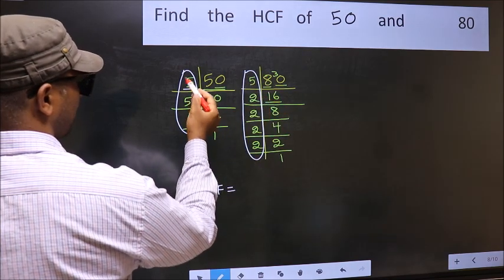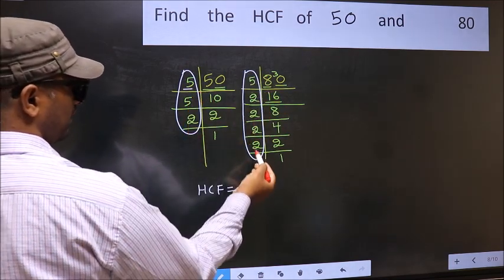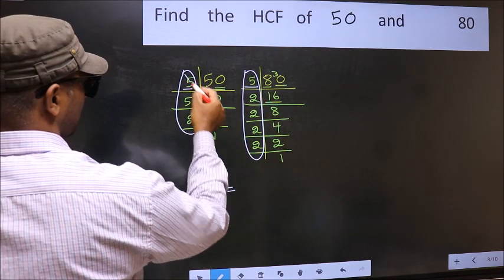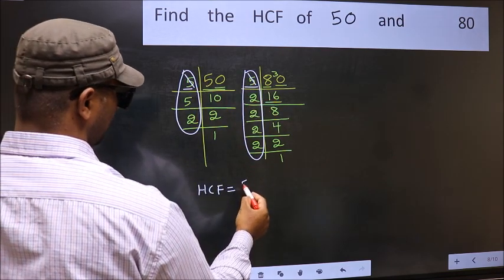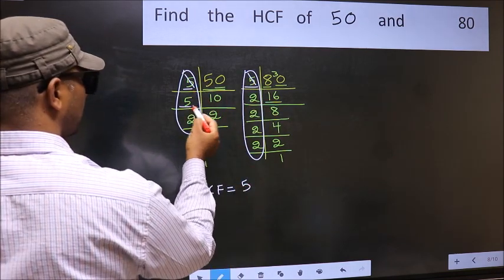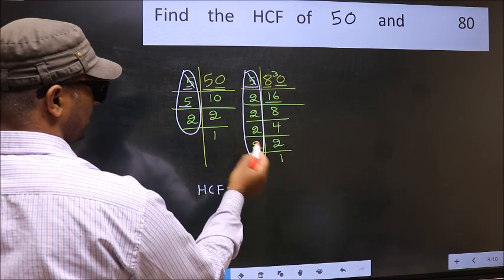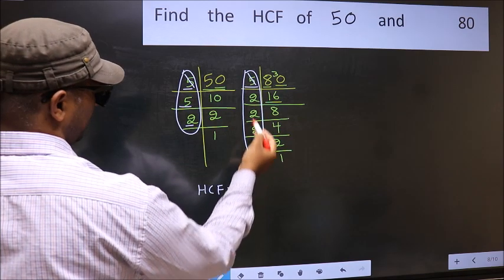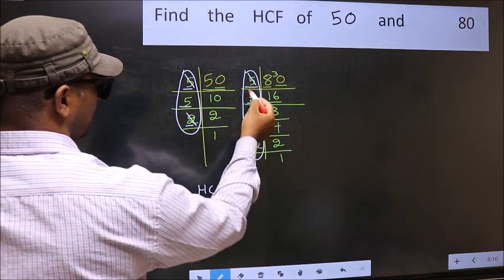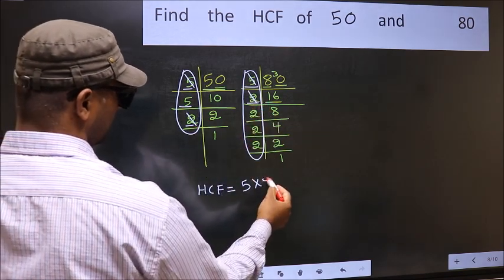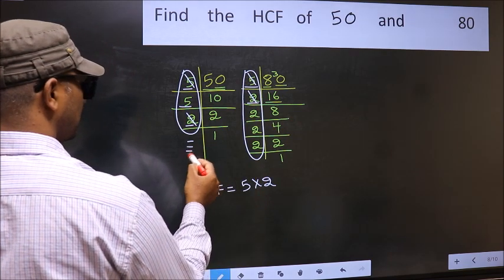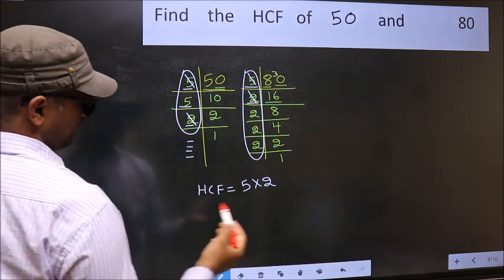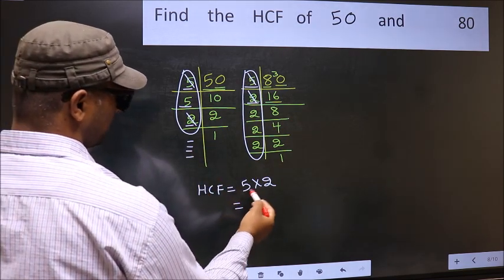Starting with the number 5. Do we have 5 here? Yes. So cut 5 right here. Next number 5. Do we have 5 here? No. Next number 2. Do we have 2 here? Yes. So cut 2 right here. No more numbers have been left out. So our HCF is 5 times 2, 10 is our HCF.